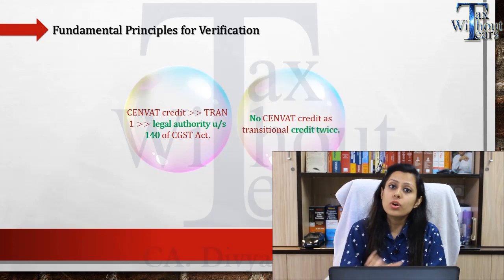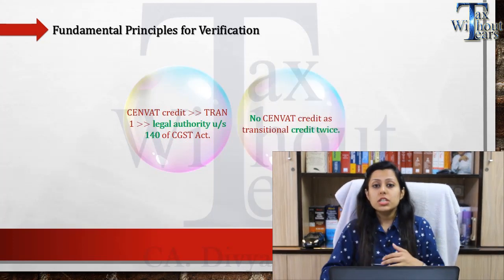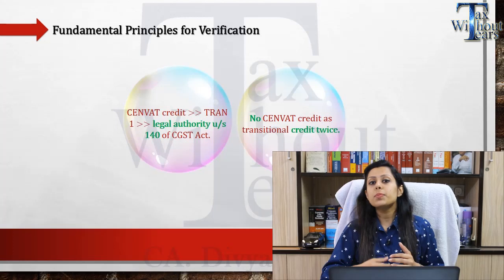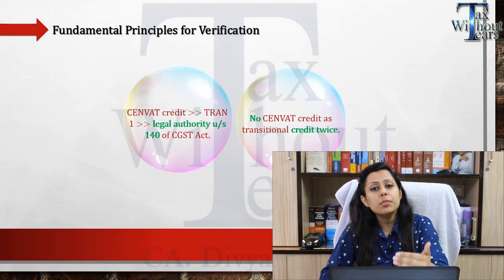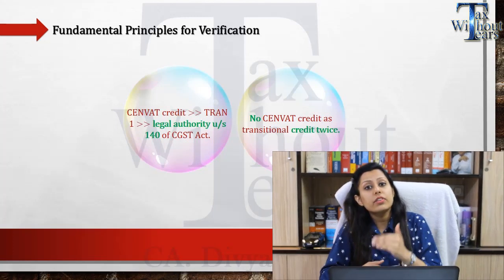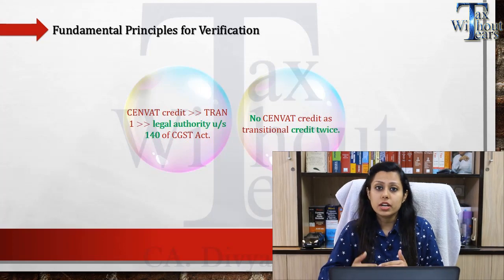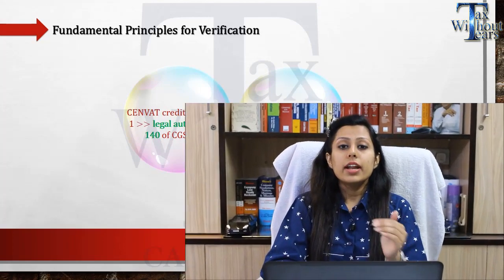Secondly, no credit should be taken twice. Some people have claimed the credit in Tran forms as well as in GSTR-3B. Now let us come to the topic of what all things could be checked in Tran 1 form. First of all, there was Table Number 5.